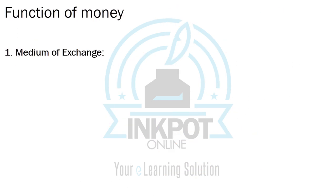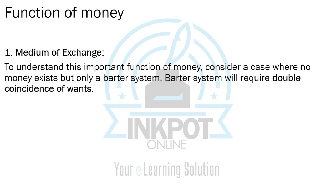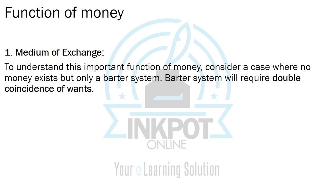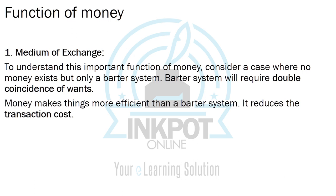With this, we move on to the functions of money, which is an important topic. The functions of money are basically the chief features of money — what roles does money serve in an economic system? The first function, which we've already touched on, is that money serves as a medium of exchange. To really appreciate this point, we have to think first in terms of the barter system.